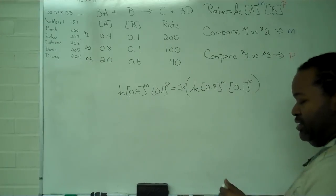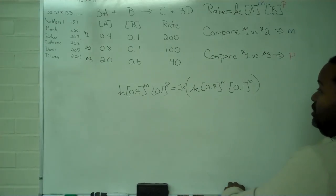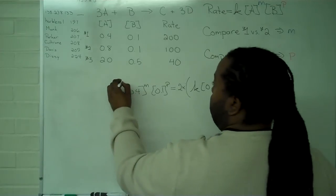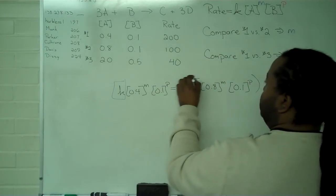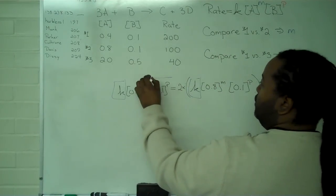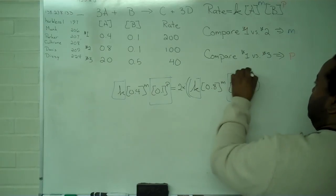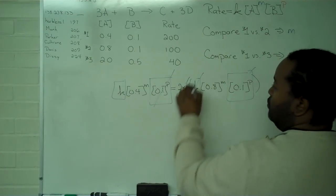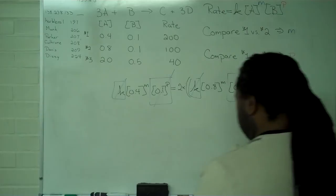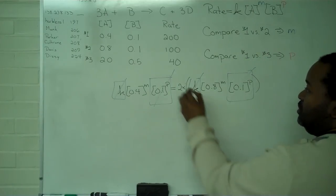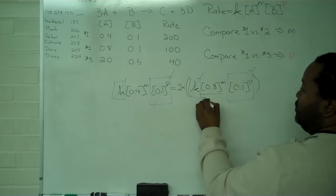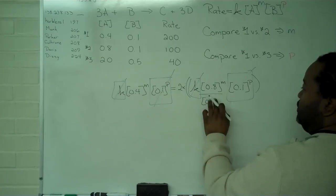Now that we've written out this equality, we can actually start eliminating things. Our rate constants will be the first to go, and then our concentration of B can also be eliminated. Now, we want to solve for M, so I'm going to divide both sides by 0.8 raised to the M.